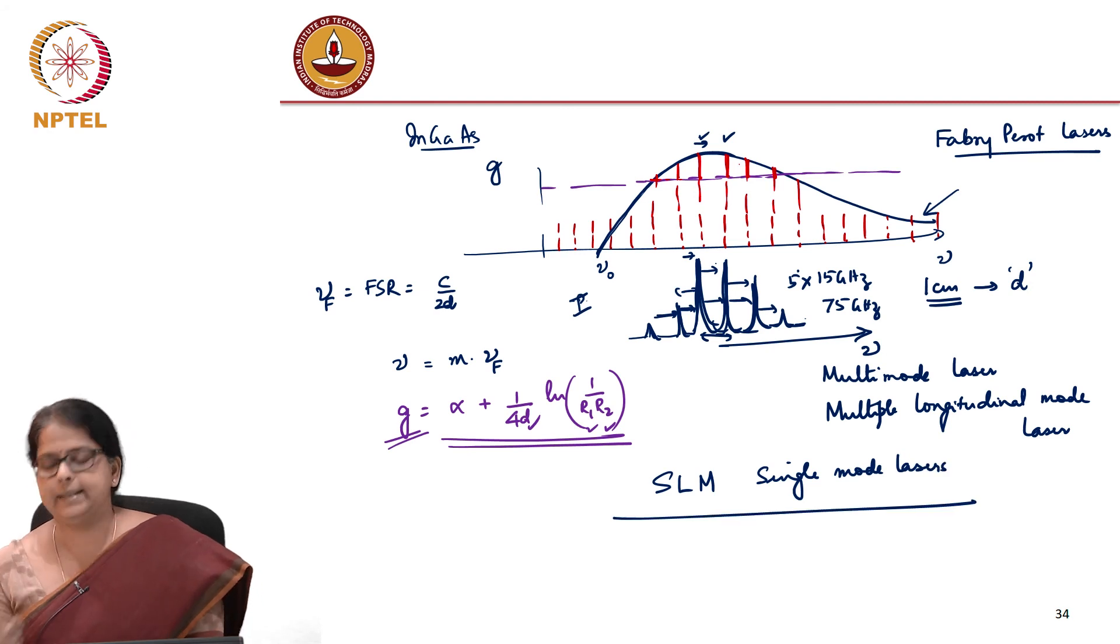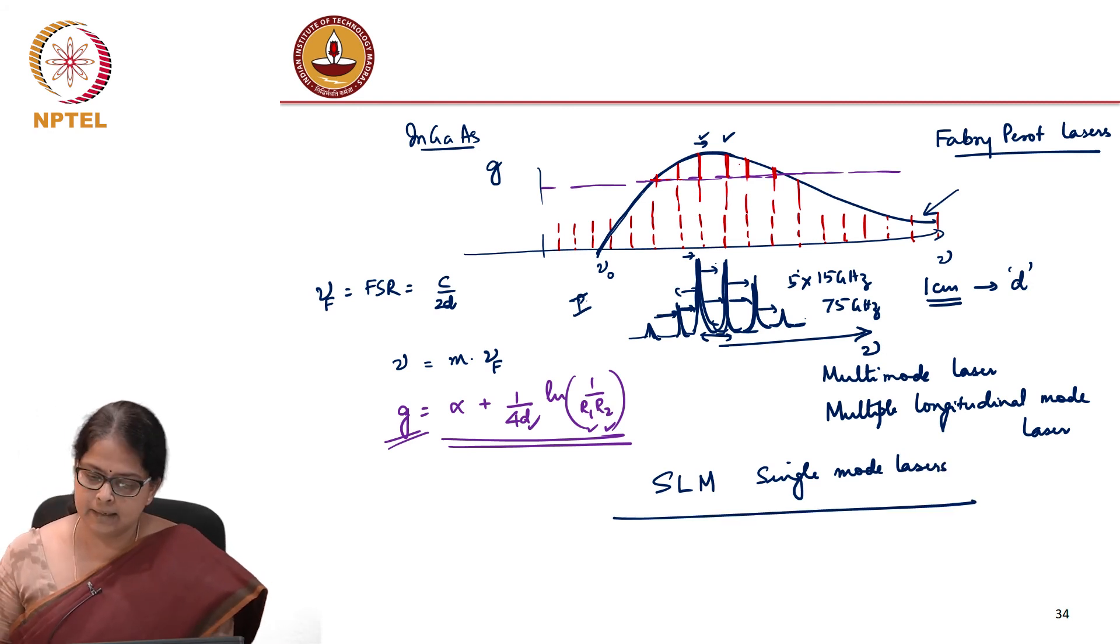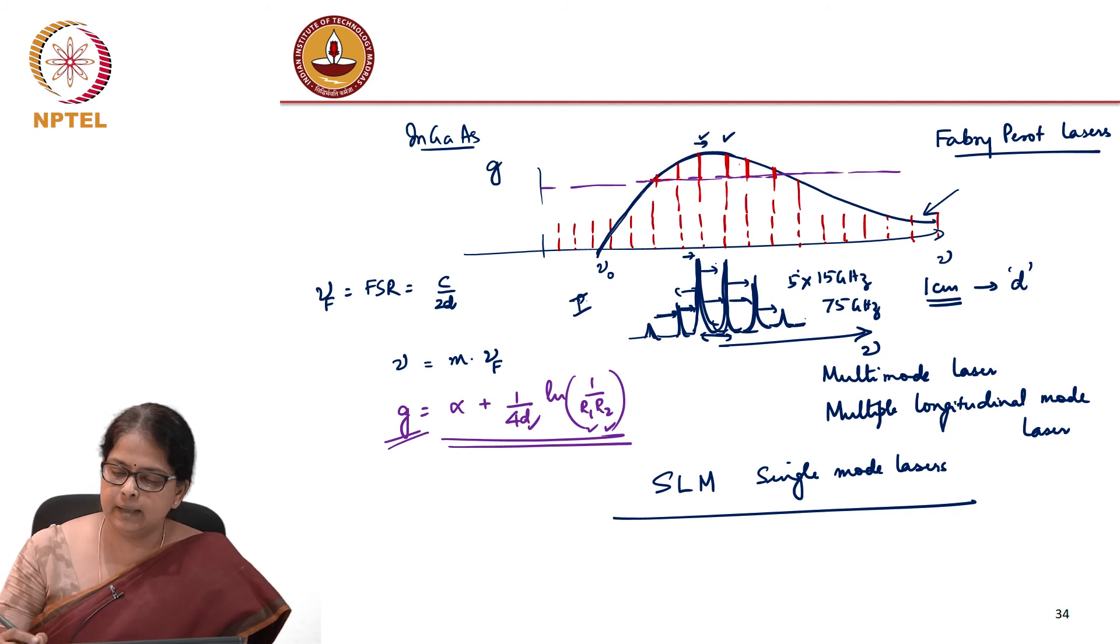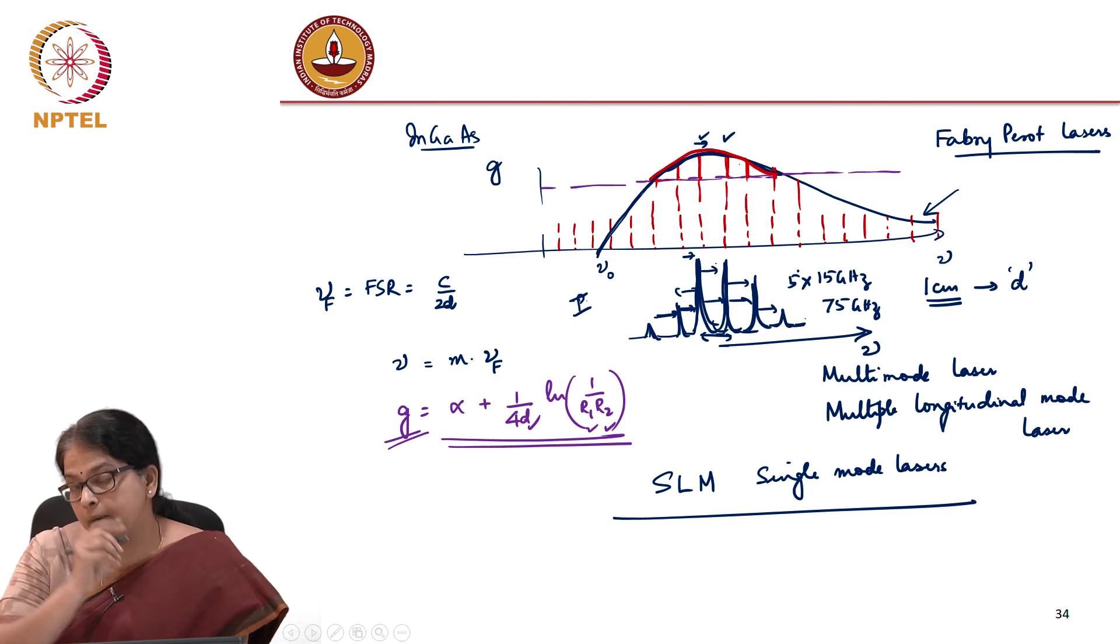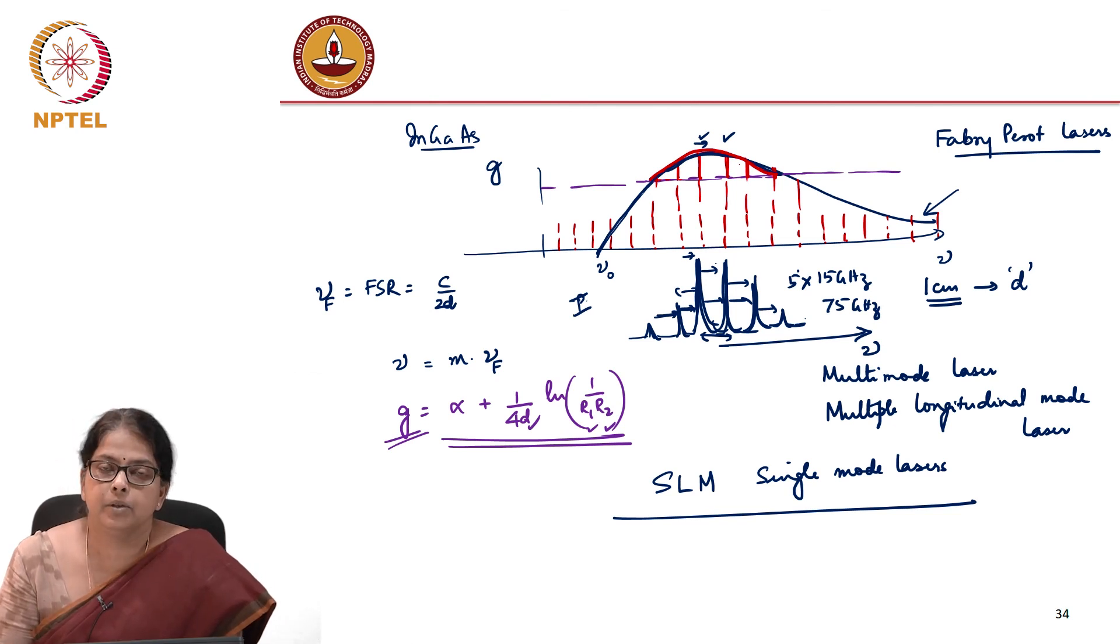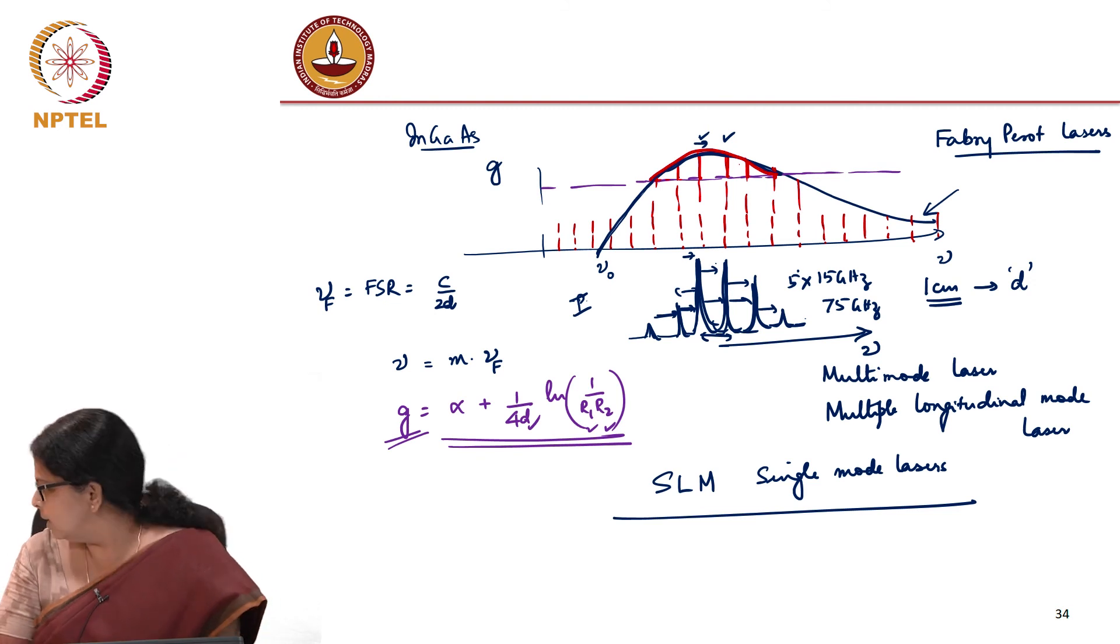How do you make an SLM now? You can make an SLM by ensuring that in this region where the gain is greater than the loss, you need to have only one longitudinal mode. How do you make sure that you have only one longitudinal mode? What is the parameter that you can play with?